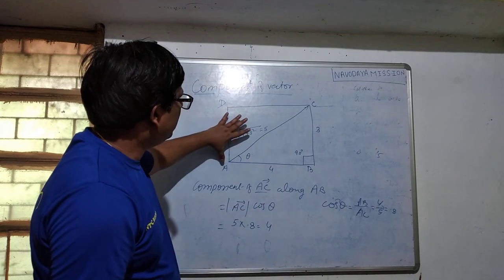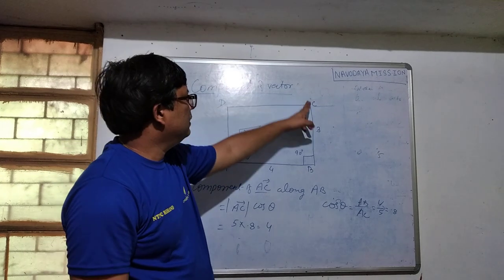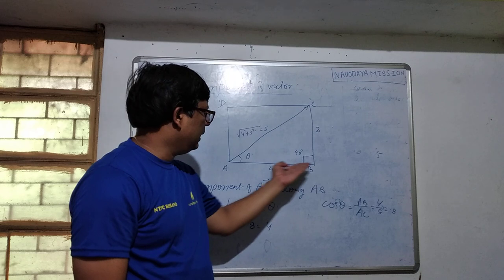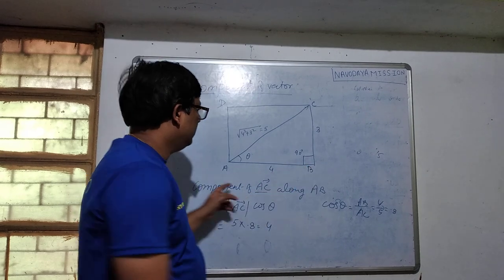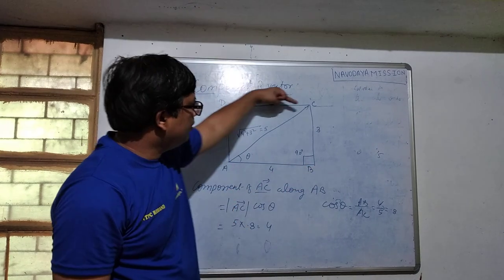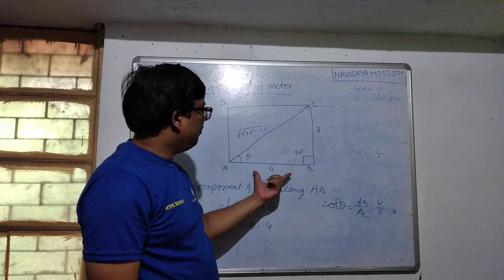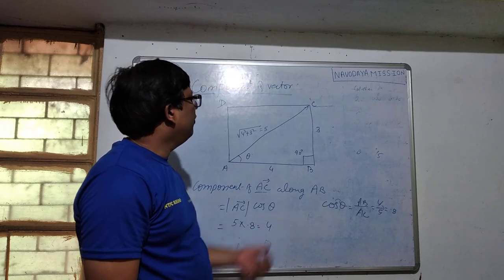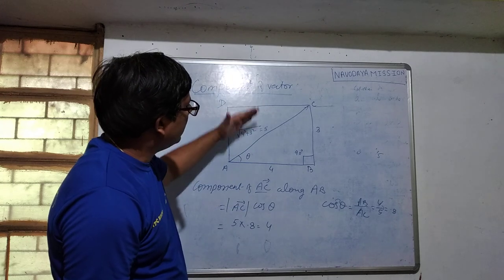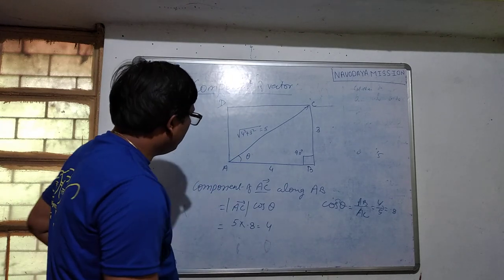This is very simple to verify also: when we drop a perpendicular from AC along AB, that length gives the component of the AC vector. So at first sight it is clear that 4 is the component of AC vector along AB vector.